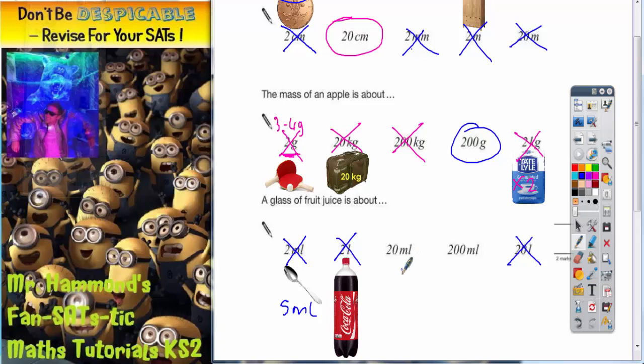So the only thing we've got left to choose from is 20 milliliters and 200 milliliters. Now, think about what we just said about a teaspoon. If a teaspoon is five milliliters, four of these, four teaspoons, would be 20 milliliters. Now, would you really have a glass of fruit juice that's only got four teaspoons in it? Of course not. So 20 milliliters is not going to be enough either, because it's four teaspoons. So the only one left is the most sensible one, and that is 200 milliliters.